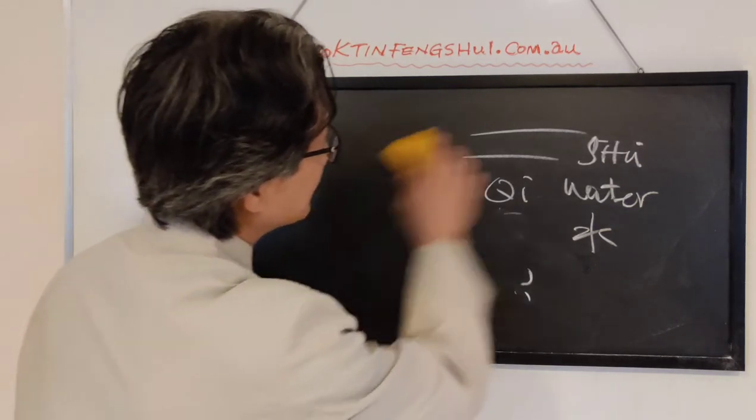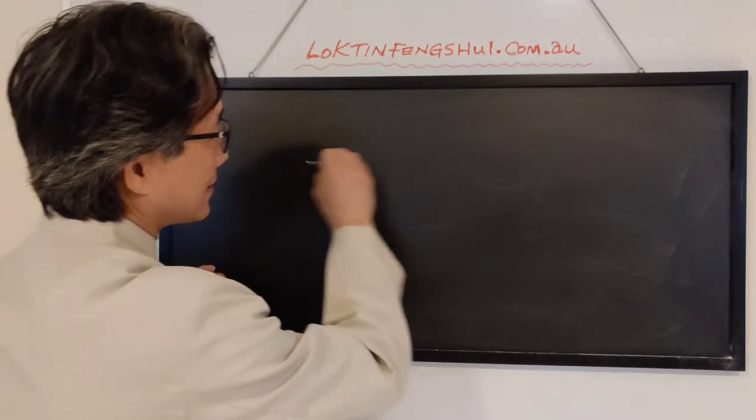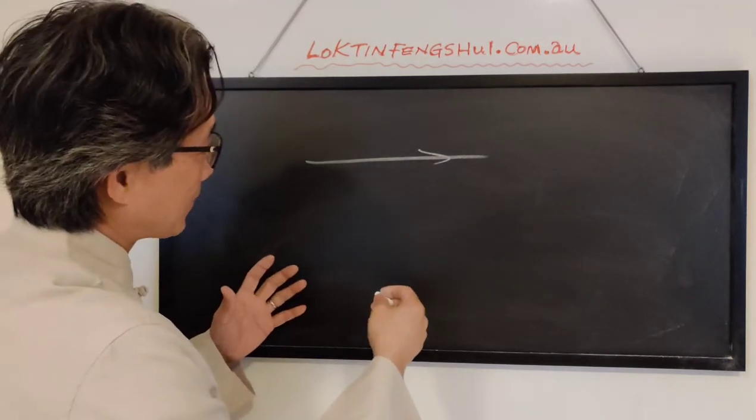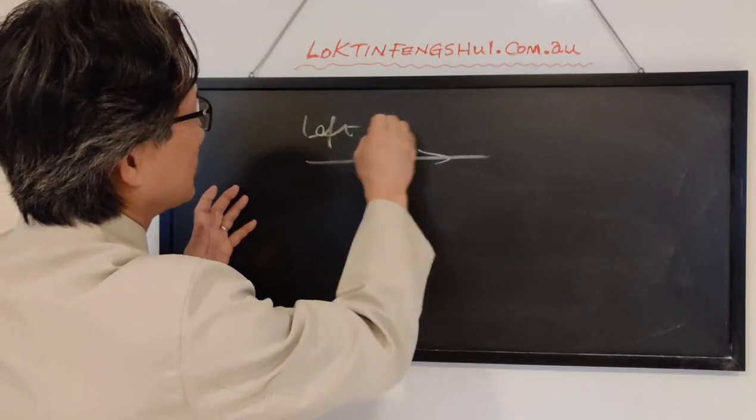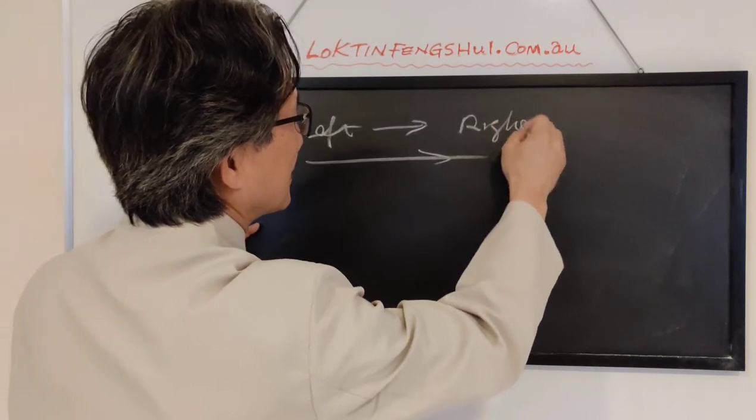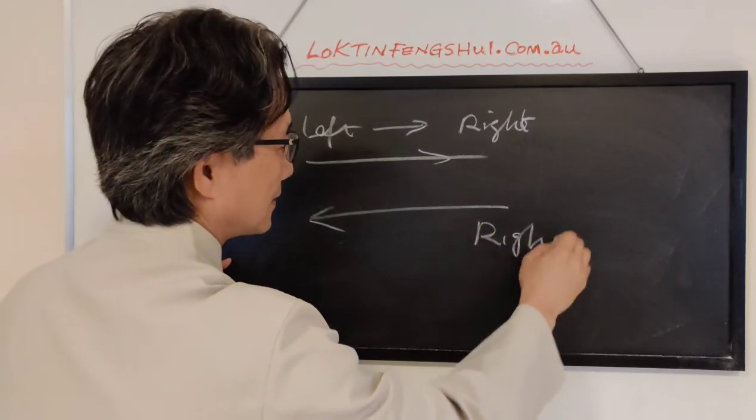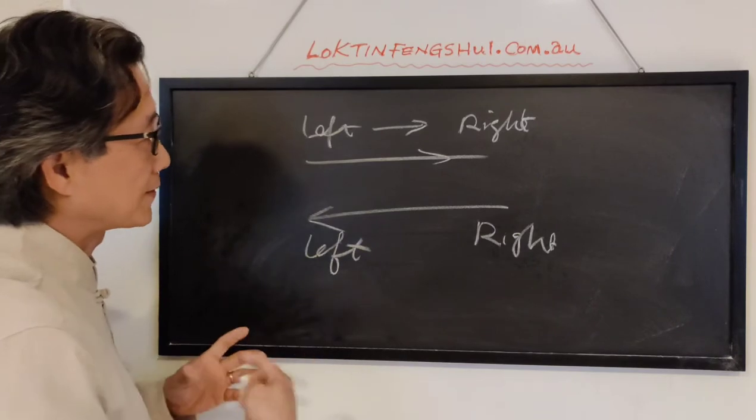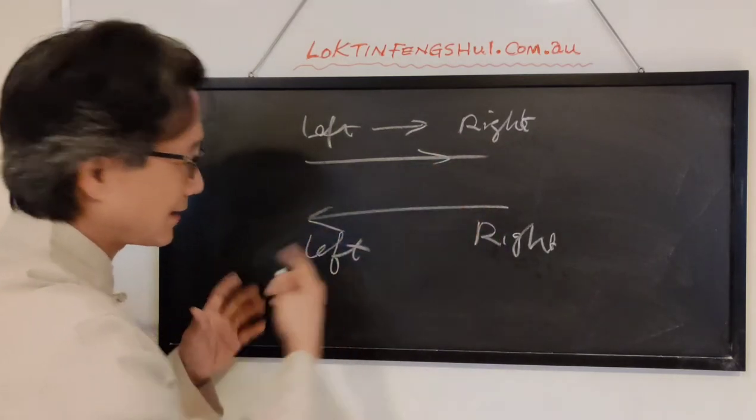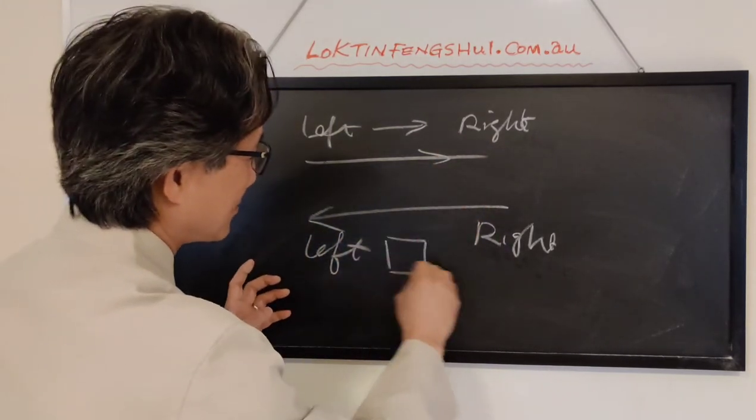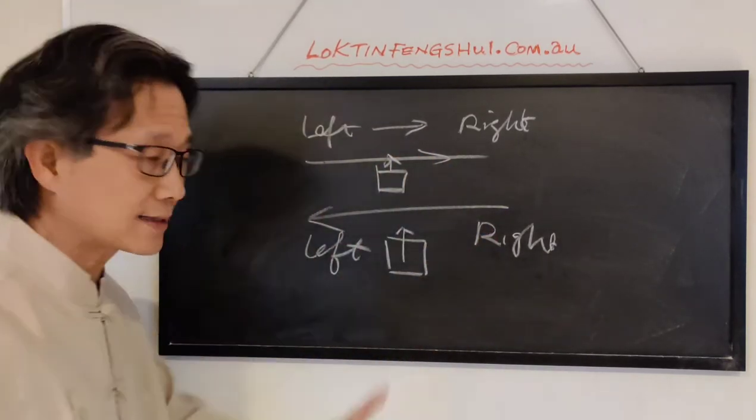There's a street or road - that's one type of water. Like water from the left moving to the right, or the other way, from the right moving to the left. In Cantonese, left to the right or right to the left. For this one, let's say the house is here facing the street. That's the moving street. That's one form.